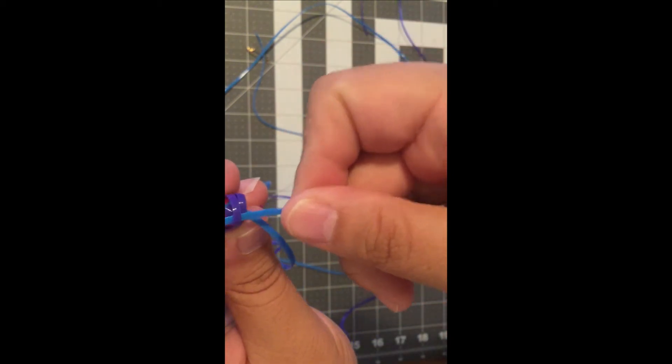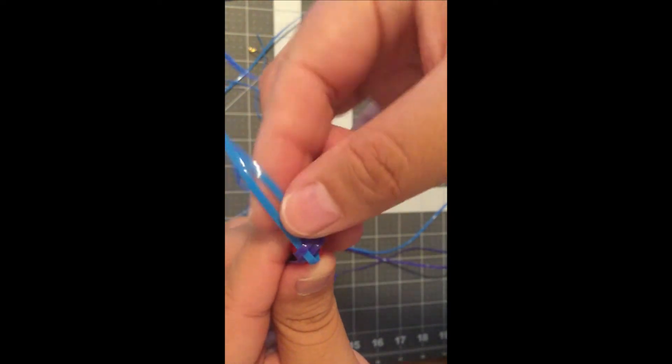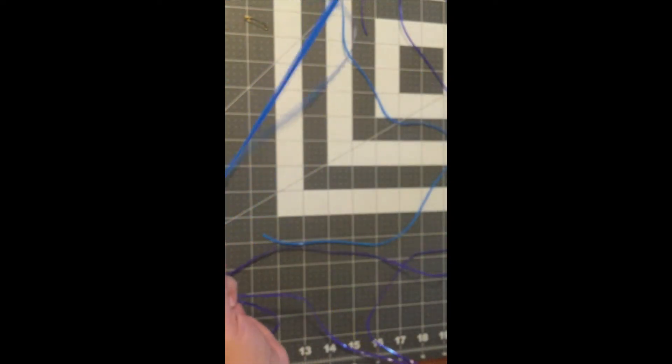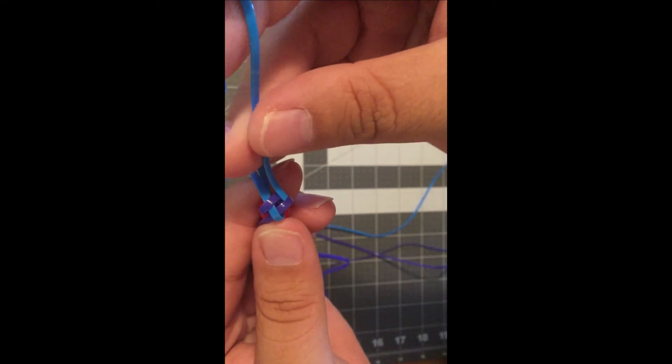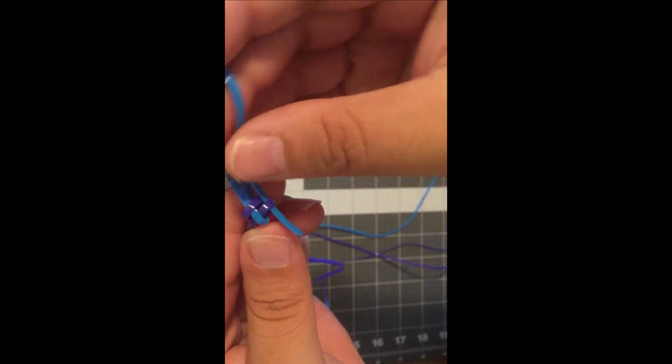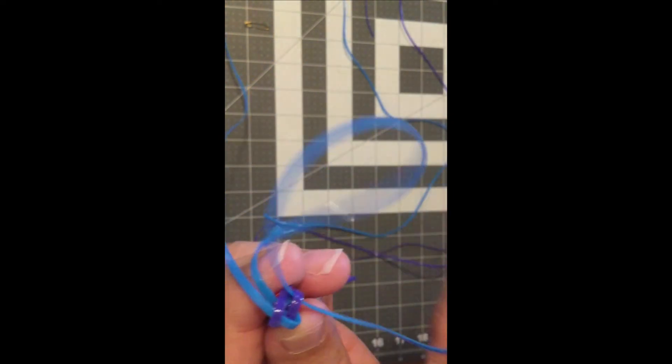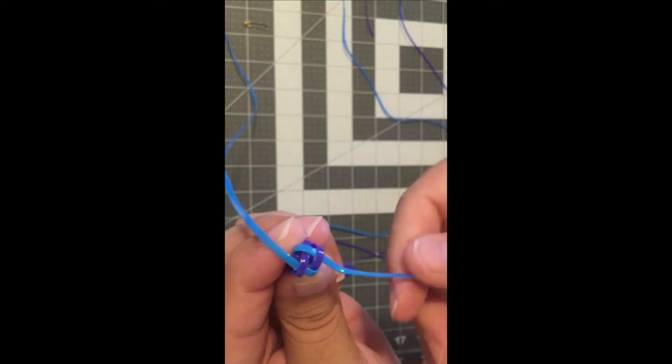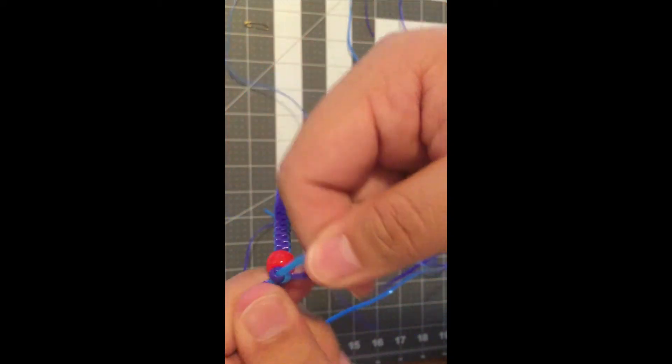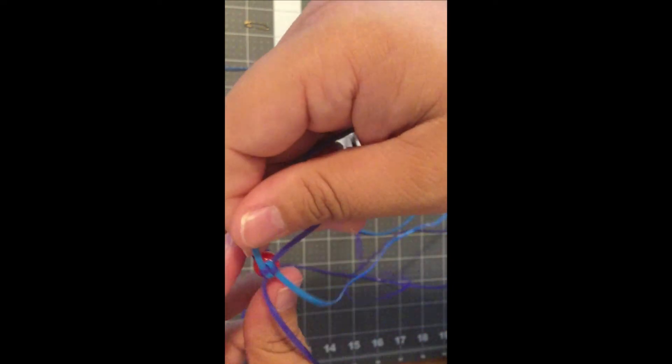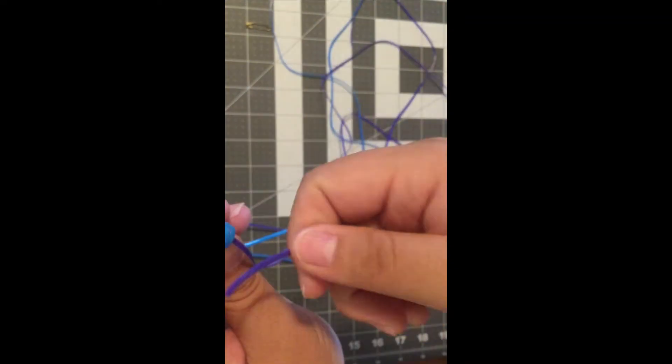And the other cords will do the same as you do with the square pattern. Skip the first loop and under the second loop. Make sure that your cords don't get twisted before you tighten them. The tighter you pull your cords, the neater your lanyard will look. Continue to do this with your cords.